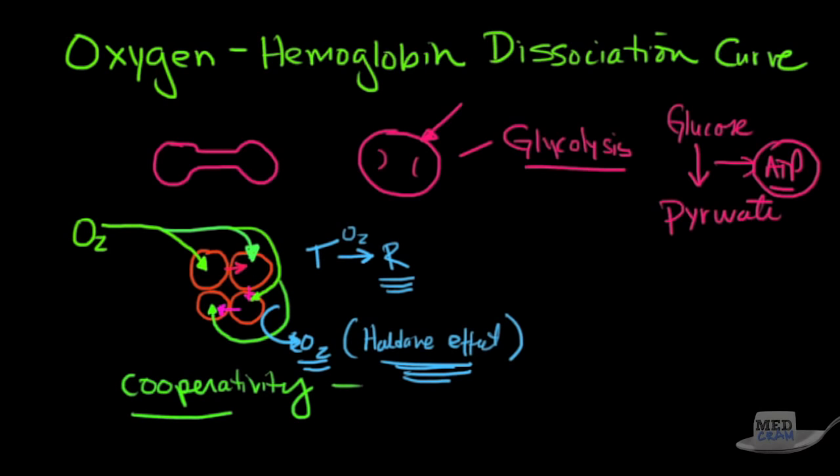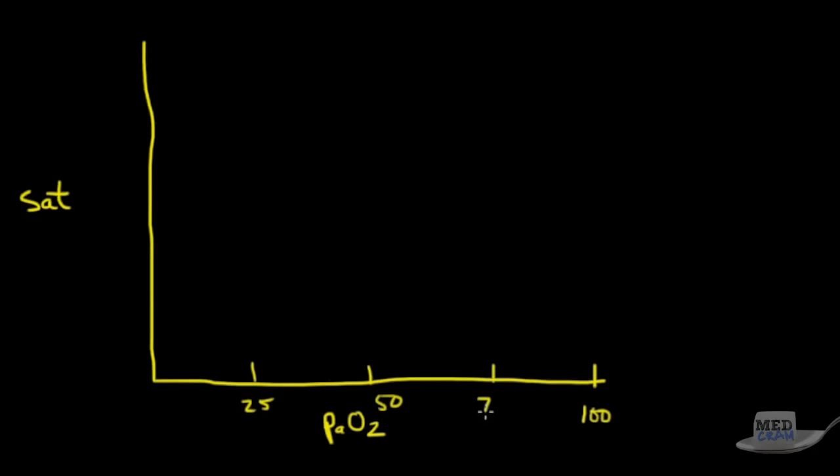But let's talk about the hemoglobin binding curve. So the way that this is represented, we've talked about this before in the other lecture on delivery of oxygen, is there's a relationship between the partial pressure of oxygen in the blood and the saturation of the hemoglobin molecule. So this is saturation here and this is PaO2, and we can take that all the way up to 100. So this is 100, this would be 50, this would be 25, 75. This is the PO2 that we're talking about here.